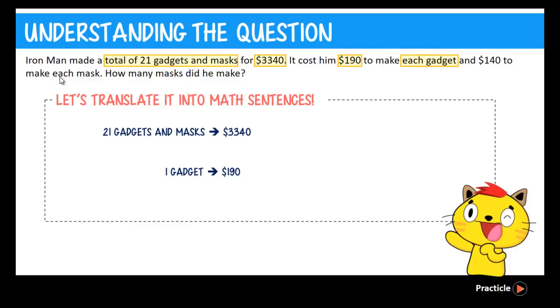Similarly, for each mask, every one mask will cost him $140 to make. So we put that down. Very expensive, right? Not easy to be Iron Man. After writing these three sentences, we are actually 50% done already.